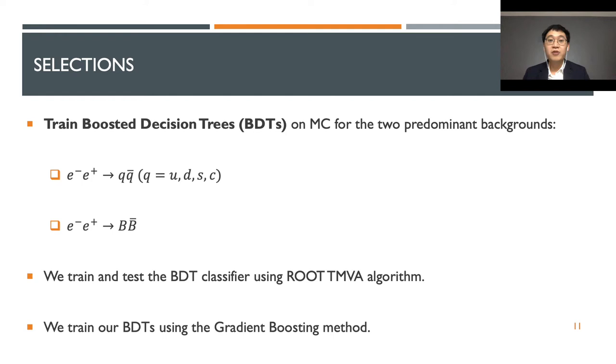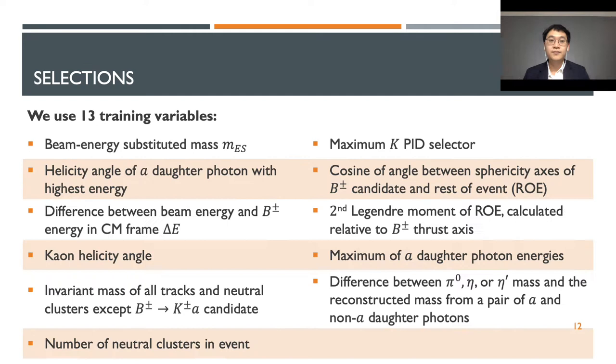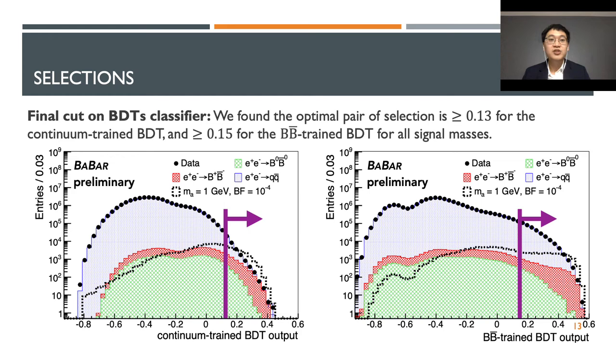We train the BDTs for the QCD and the B-Bbar background using the gradient boosting method. We also train and test the BDT classifier using ROOT TMVA algorithm. After multiple trials, we shortened our list of training variables to 13 as shown here. Beside the delta E and the beam energy substituted mass variables I mentioned earlier, we have other variables that demonstrate the difference between the signal and background regarding the expected beam geometry angle, invariant masses, and energy of the beam components. Of course, beside the resulting diphoton invariant mass that we try to construct here, we also have the multiplicity of the neutral cluster and the constraint on photon energy that corresponds to the standard model meson resonances.